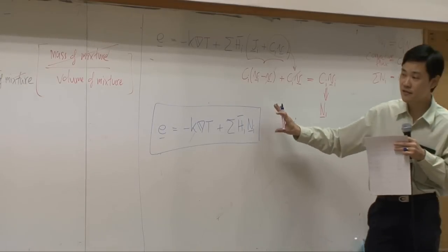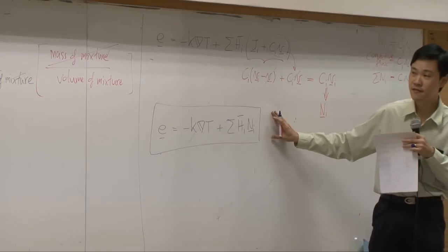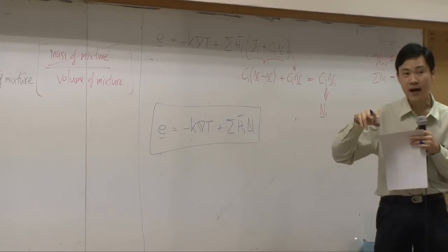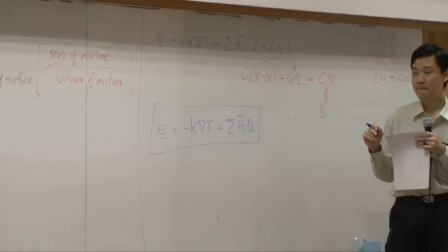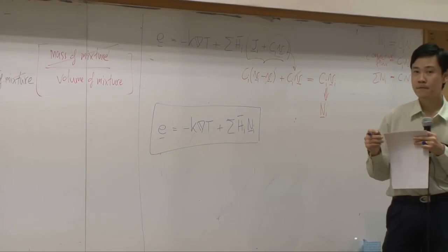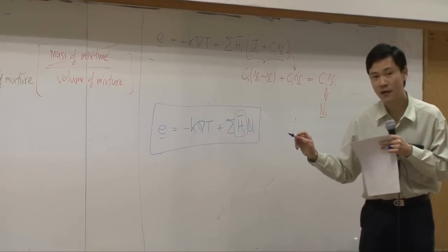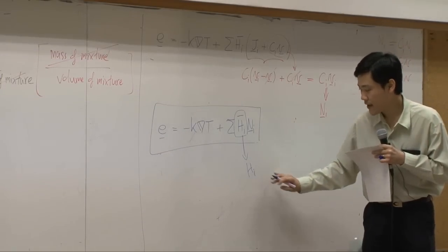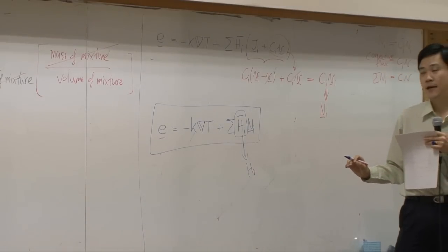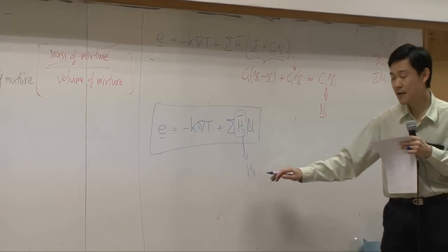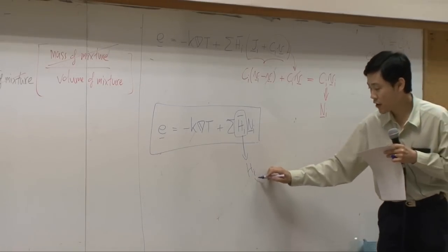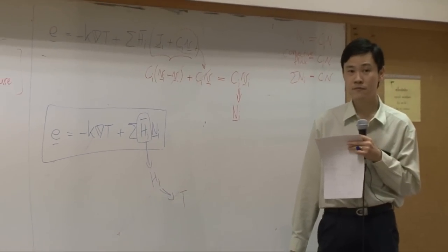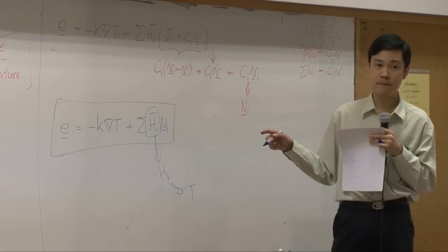We can use this combined energy flux in the equation of energy, or the shell balance for energy, so that we can find the temperature profile later. But again, this equation still has partial molar enthalpy which needs to be converted into enthalpy of pure species i. You will also need to convert enthalpy to a function of temperature — how enthalpy is the integral of Cp dT.